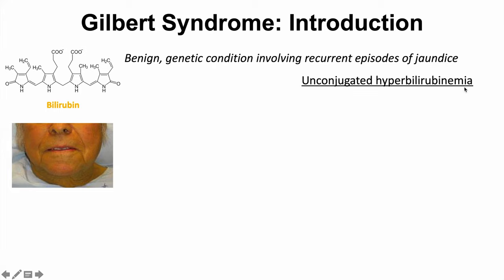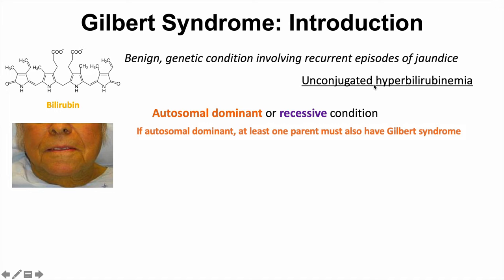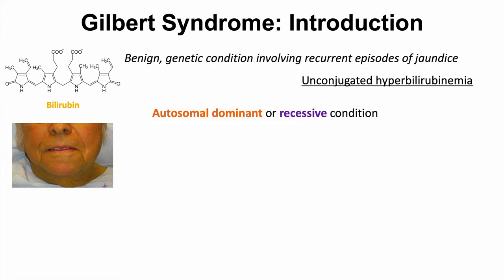Unconjugated hyperbilirubinemia — 'hyper' meaning high, 'bilirubin' being that compound we discussed, and 'emia' referring to the blood — means high levels of bilirubin in the blood, and it's unconjugated. It is either an autosomal dominant or autosomal recessive condition depending on the mutation.